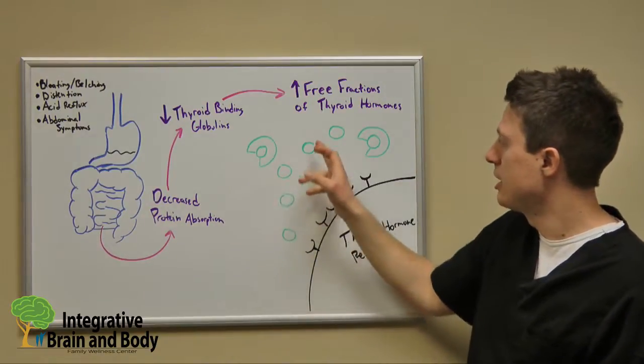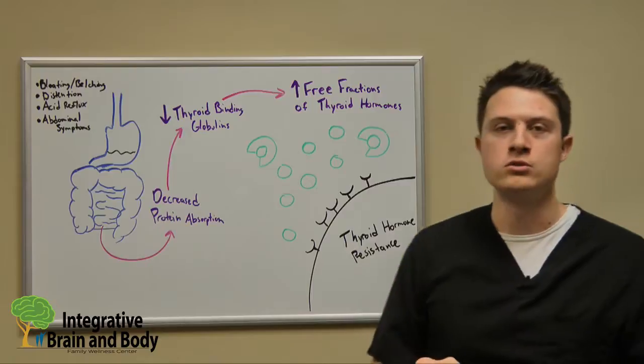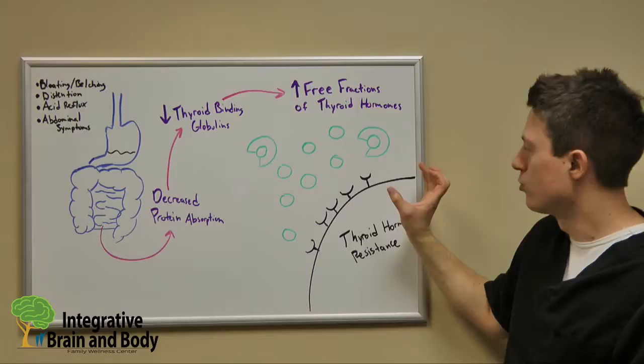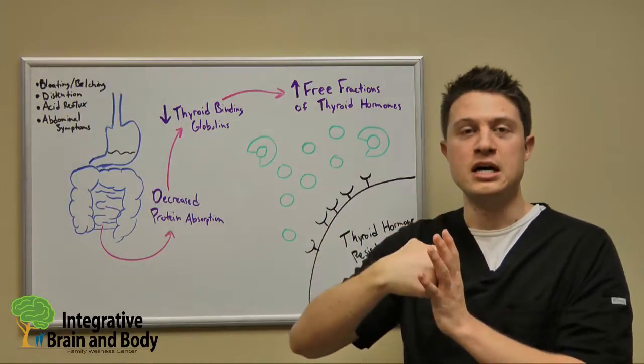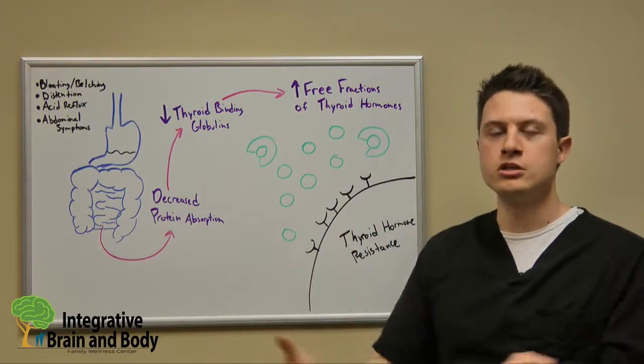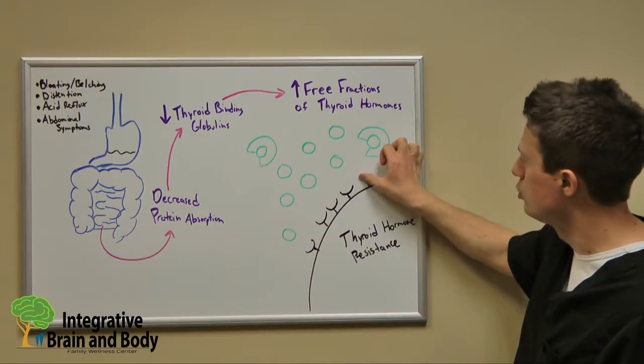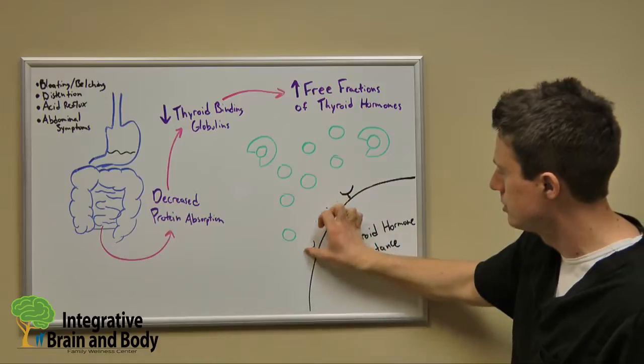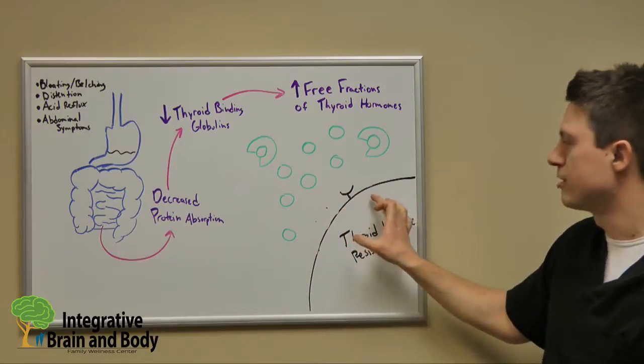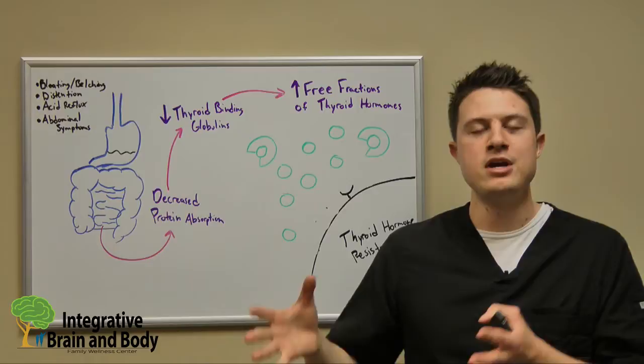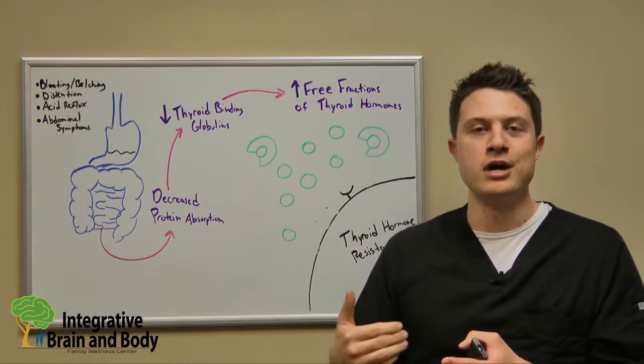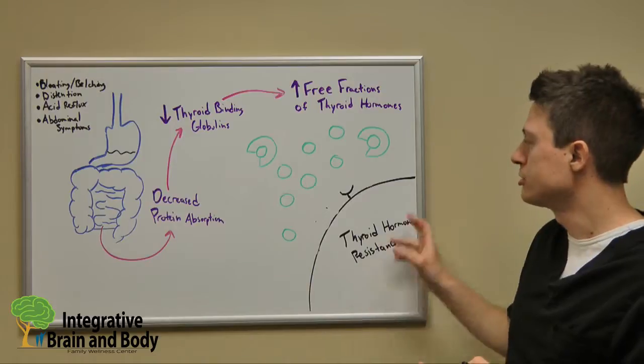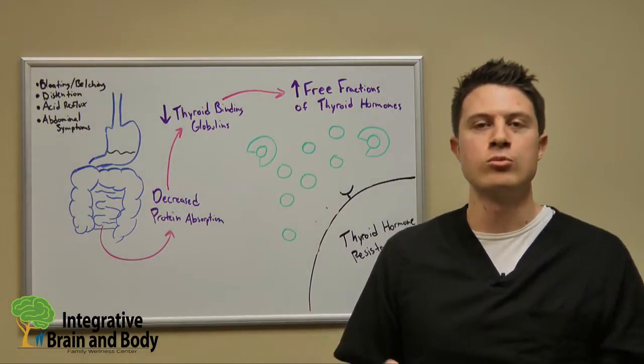If we have increased free fractions of thyroid hormones, what our cell does is, on our cell we have these little receptors where thyroid hormone can dock onto. And if we have too much of the free hormone floating around, what our cell will do is it will literally start to retract some of these receptors, and we'll see a decreased amount of thyroid hormone receptors. So what does that mean for the entryway of thyroid hormone into that cell? Well, it means that our cells grow very resistant to thyroid hormone and they develop something called thyroid hormone resistance.